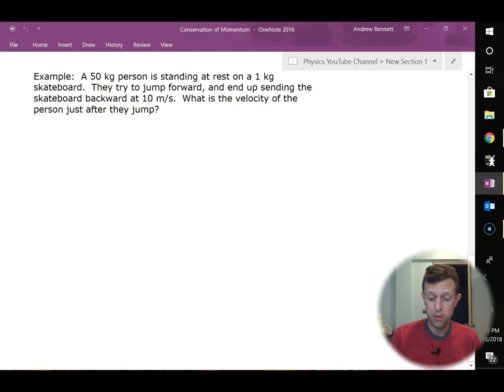So we've got a 50-kilogram person. They're initially at rest. The 1-kilogram skateboard that they're standing on must be at rest too because the person's at rest. We have the person jumping forward. The skateboard gets sent backward at 10 meters per second. And we're looking for the velocity of the person.